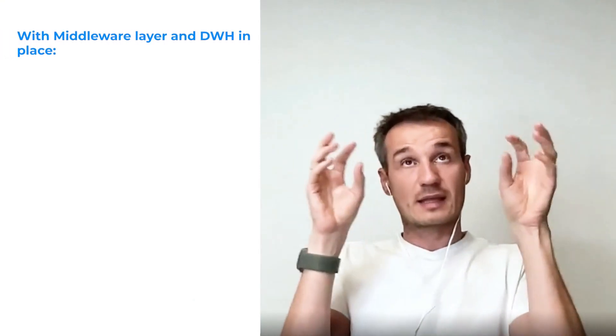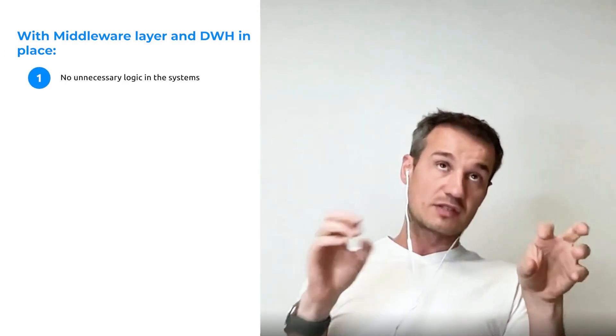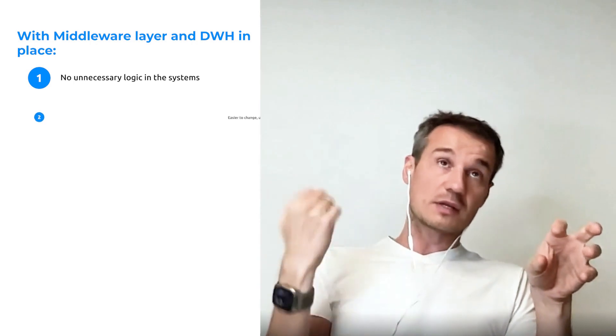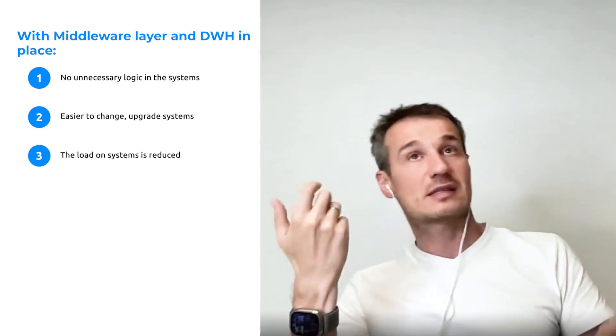At times we require filtering of data. If we perform filtering within our own service, the service itself begins to operate slowly. However, if a distinct middleware microservice handles this filtering, it effectively reduces the load on the end systems. In the end, with the presence of a middleware layer and a control repository, our systems are not overloaded with unnecessary logic. There is no need to write anything exclusive in them, which means we can connect, change, and update the systems quite freely, and the load on these services decreases.